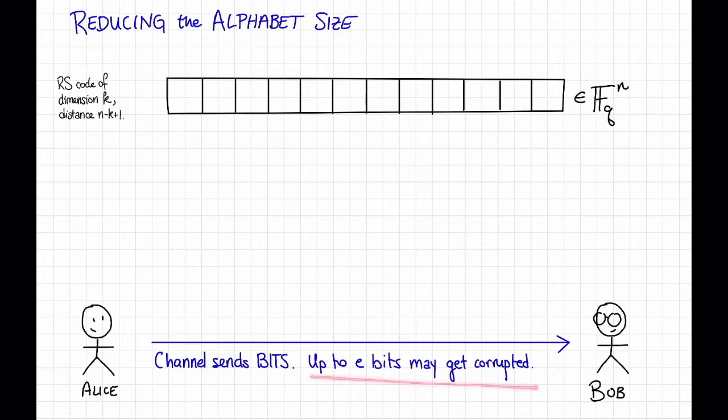it just knows about zeros and ones, and the rule is that up to e bits might get corrupted when Alice tries to send Bob a bit string of a particular length.